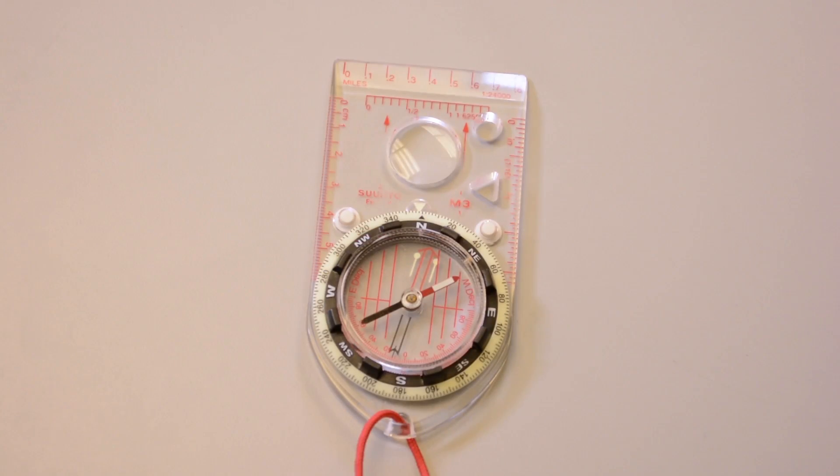Finally, the important parts of the compass are luminous, so you can use it in the dark if you need to. So that's it, an overview of the Suunto M3. It's a quality compass that hits the sweet spot between function and price, and it's a great choice for most any backcountry traveler.